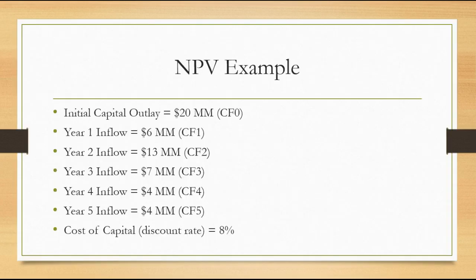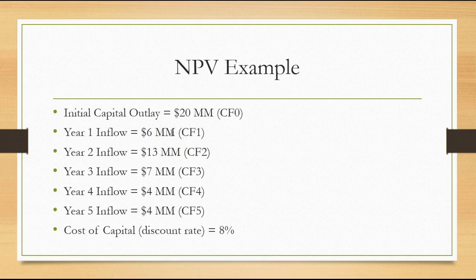Let's jump right into our example. We have a capital outflow for our project that costs about twenty million dollars to get started in year zero, followed by five positive cash inflows: six million, thirteen million, seven million, and four million dollars in years four and five respectively. We're going to use a cost of capital or discount rate of eight percent to discount all these cash flows back to present value. We sum up all those present values, and NPV will come up either positive or negative — we then accept or reject the project.